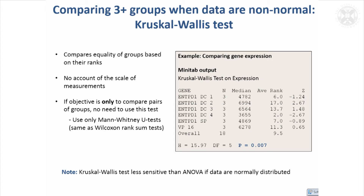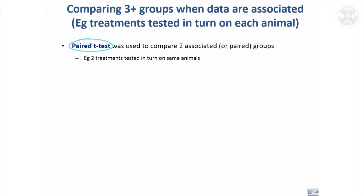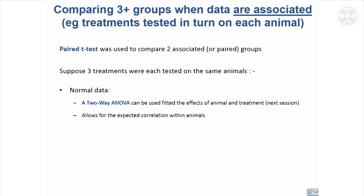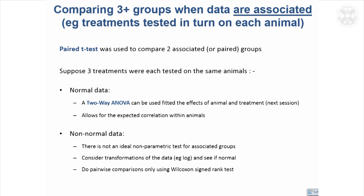Most basic statistical packages should have the Kruskal-Wallis test available. We also thought about the paired t-test when we've got paired data. Sometimes your three groups will be associated — maybe you've got three measurements taken on the same animal. In that case, we can use a two-way ANOVA, which takes account of both the treatment effect and the animal as a factor, allowing for the expected correlation. However, with non-parametric data and ranks, there's no easy way to account for association between groups.